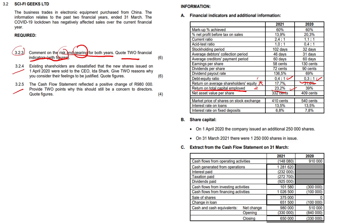Right now you're not even going to get 10% return on investments in South Africa, and 10% there is amazing. However, we must work with what's in front of us: 39% has fallen to 23%, and in any person's language that's not good. They borrowed more money — last year the loan decreased by 100,000, meaning they paid off a portion, but this year a whopping 651,500 was borrowed. That's what diluted their return on capital employed.